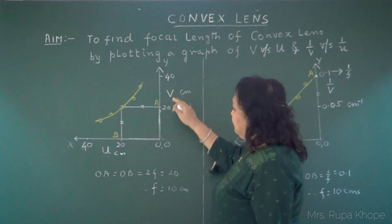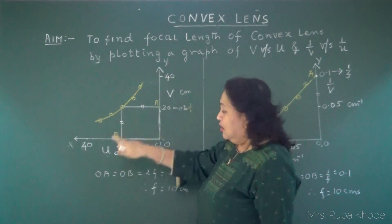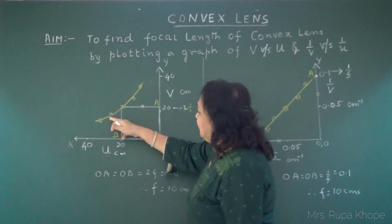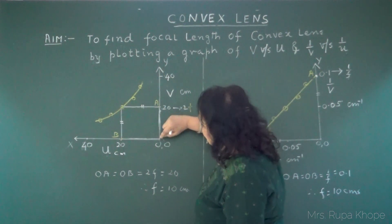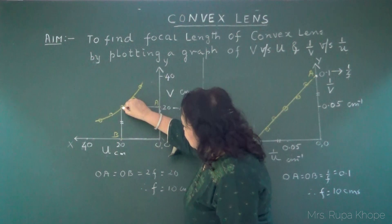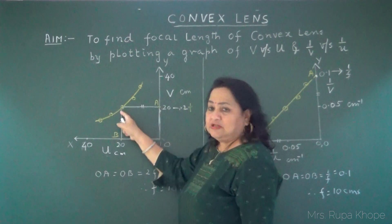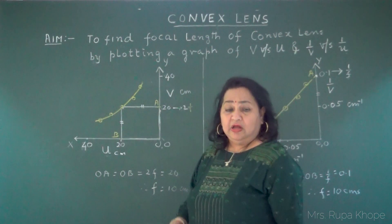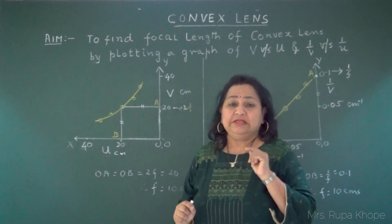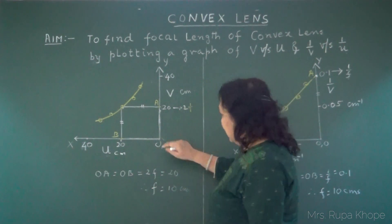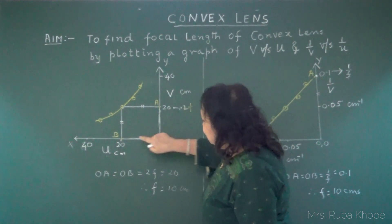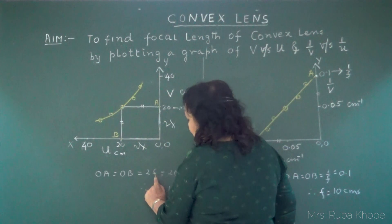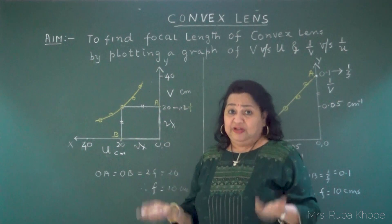Let's start calculating the focal length of the convex lens. We have finished taking all observations. For the first graph, we plot v versus u — image distance versus object distance, negative because object distance is negative as per sign convention. We draw the graph and then draw a bisector at exactly 45 degrees, which meets the curve. We draw two lines to make a square: all sides equal, so OA equals OB. In our observations, at u=2f we got v=2f. So OA equals OB equals 2f equals 20, and therefore focal length equals 10 cm.